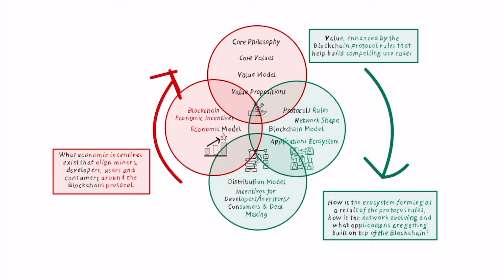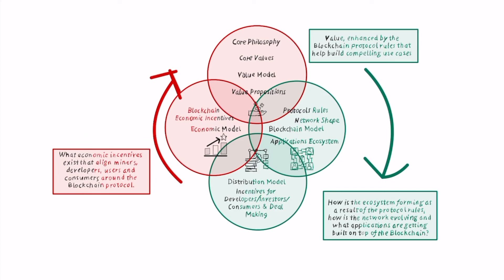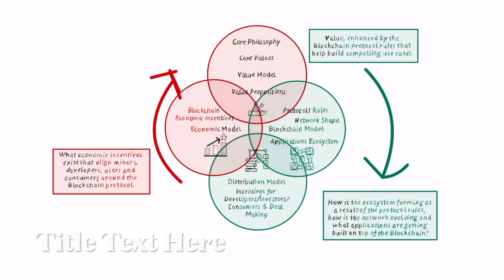From there you want to understand the distribution model — what are the built-in incentives for developers, investors, consumers, and deal-making to keep bringing in users and developers. Then there is the economic model: the key advantage of blockchain-based business models is that they have built-in economic incentives that can align different players — miners, developers, users, consumers, and investors — around the same project. Looking at all four elements together gives you a full picture of how a blockchain-based business model works.